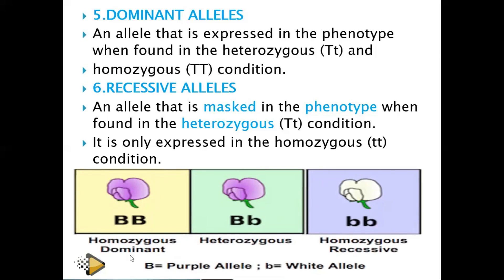Homozygous dominant means both alleles are the same dominant type. 'Homo' means the same, and 'zygous' comes from zygote — so the zygote has the same kind of alleles. Heterozygous means the zygote has different kinds of alleles, such as capital T and small t. Homozygous recessive means the zygote still has the same kind, but both alleles are recessive.